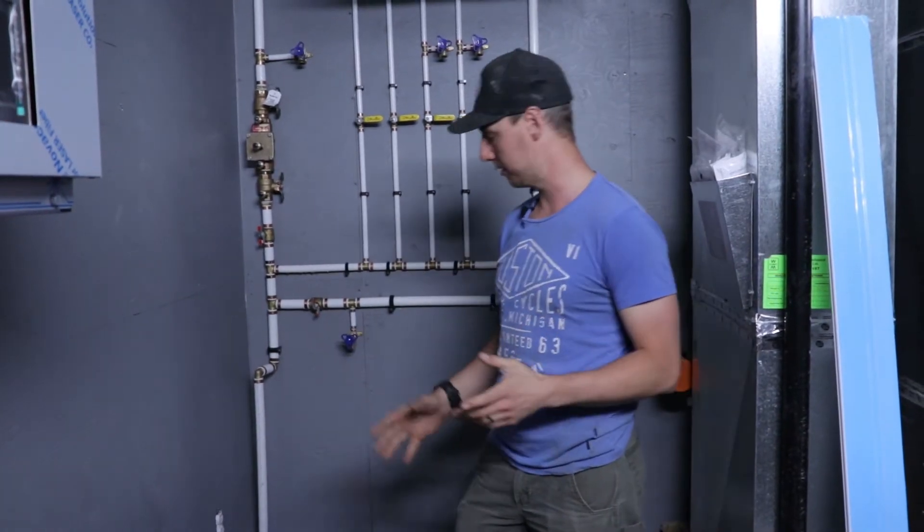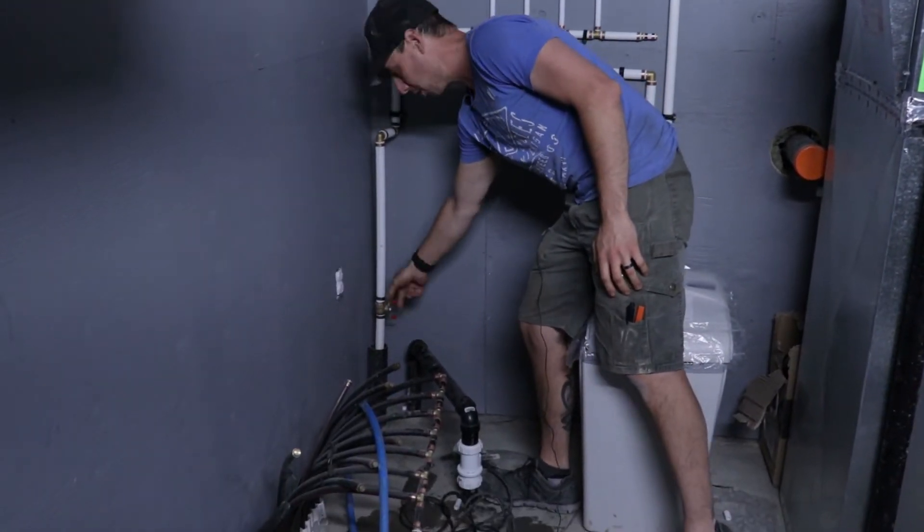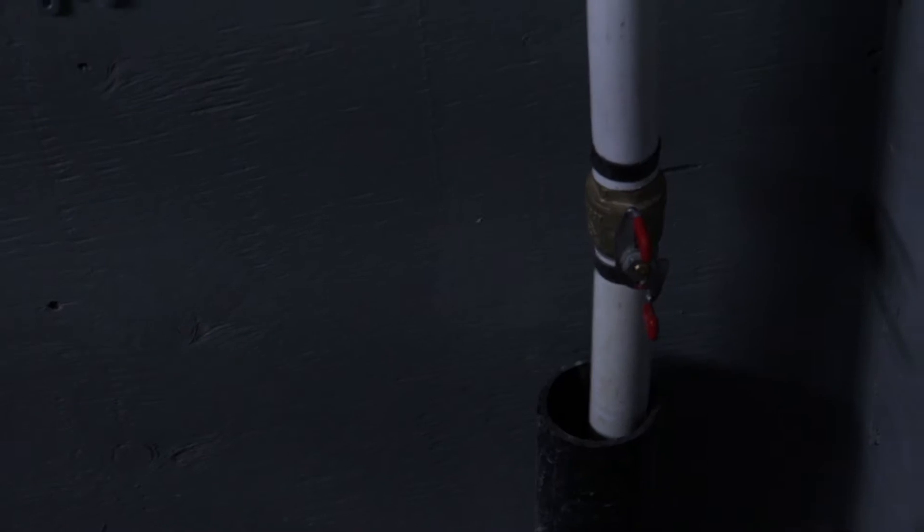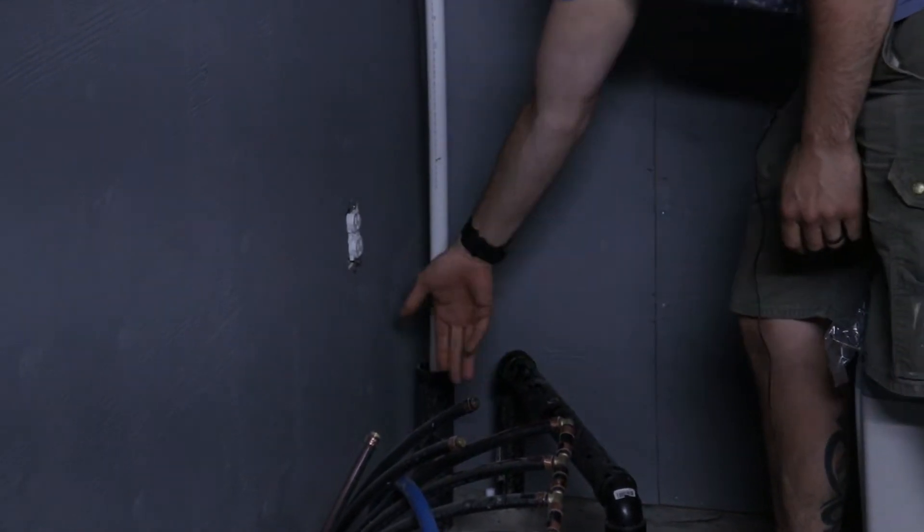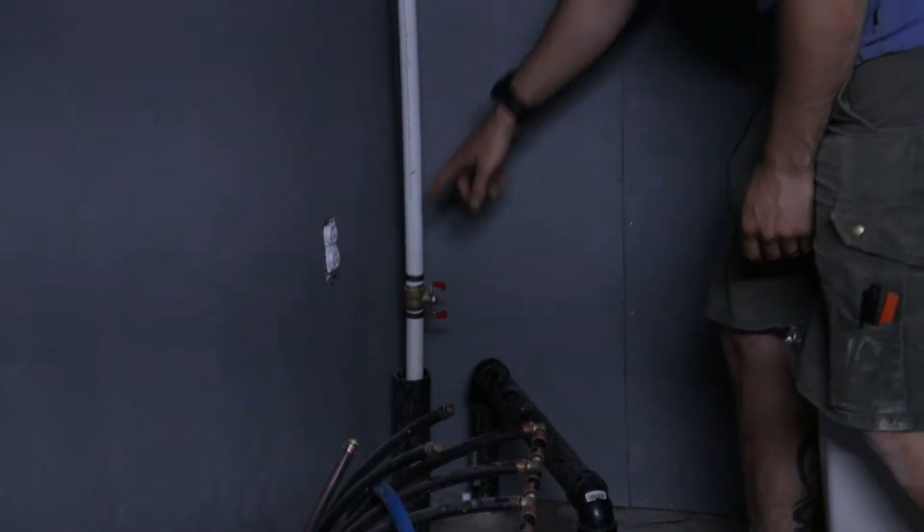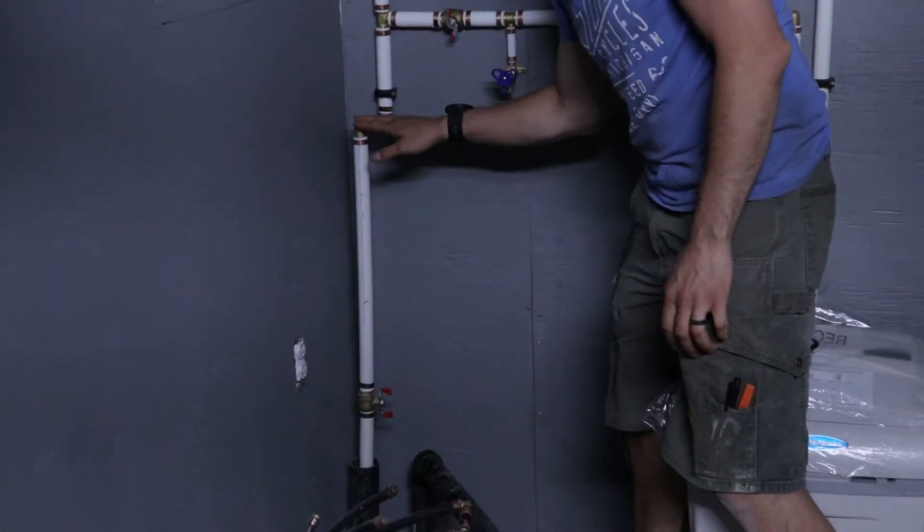The first thing we're going to talk about is where the water comes in. We have our main service coming up here with one inch pipe. We usually like to put our valve pretty low but not too low, just 12 inches off the ground with a sleeve under the concrete. We always like to leave a minimum of 18 inches before we do any fittings.